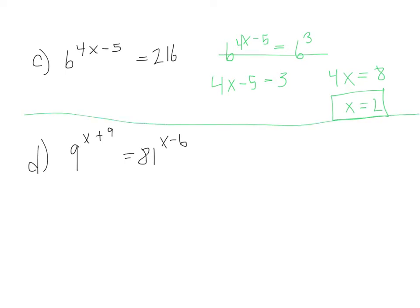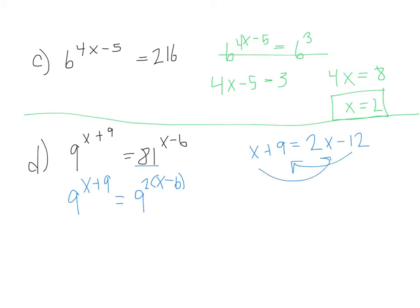For problem D: I have 9 to the x plus 9 and I want to rewrite 81 as a base of 9, which gives 9 squared. When you bring an exponent up, you multiply the powers. So their bases are now the same, giving us x plus 9 equals 2x minus 12. Bring the 12 over and the x over: 9 plus 12 is 21, so x equals 21.